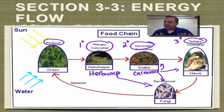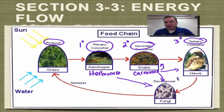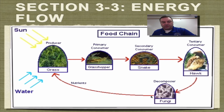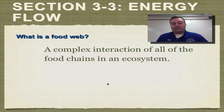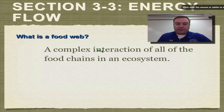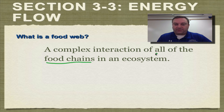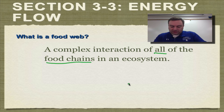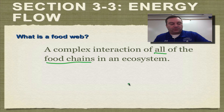This should be something very similar to what you've learned before, but you may not have had these fancy vocabulary words, so make sure you remember those. A food web is basically a complex interaction of all of the food chains within a certain ecosystem — imagine a bunch of food chains being looked at all at once. That's what a food web is.